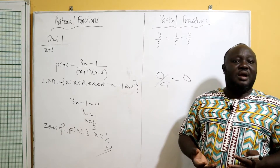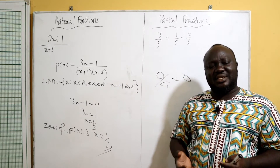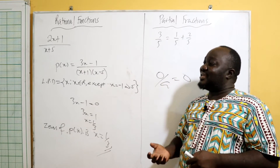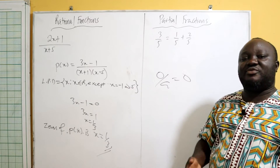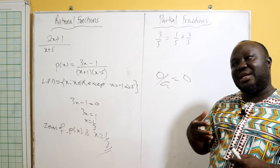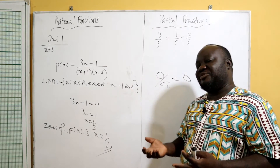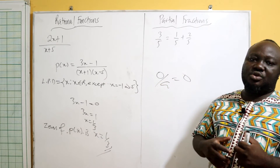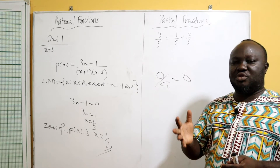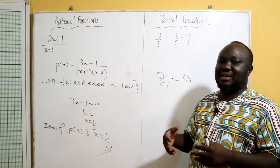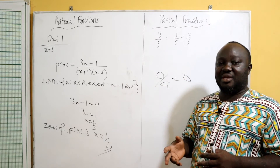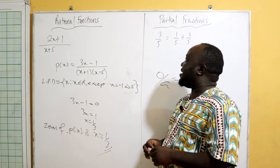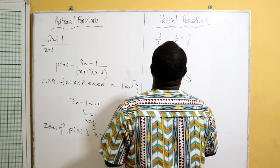We have different types of partial fractions: ones where the denominators are linear, ones where the denominators are quadratic, ones where the denominator has repeated factors, and when it is an improper fraction. For improper fractions, we first perform normal division to get the quotient and remainder, then express the remainder part as partial fractions. Let's go ahead and solve some examples on partial fractions.